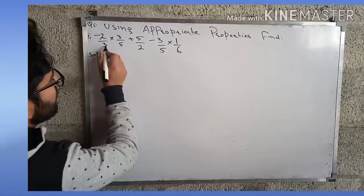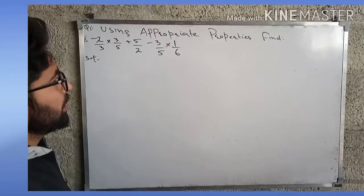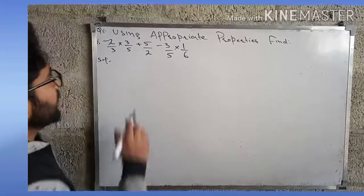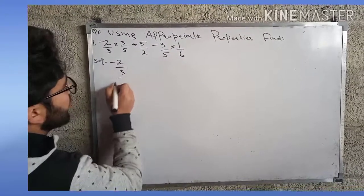We have -2/3 × 3/5 + 5/2 - 3/5 × 1/6. We have to use appropriate properties. We can write it as -2/3 × 3/5 + 5/2.